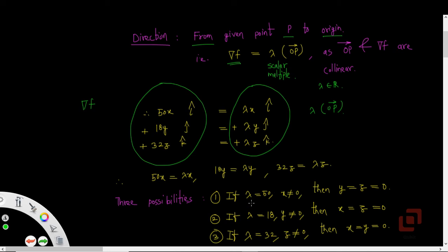The first possibility is that if λ = 50 and x ≠ 0, then that forces us to take y and z as 0, because if we let λ be 50 in the second equation we get 18y = 50y, and this equation will be satisfied only when y is 0, and the same thing will take place with the z coordinate.